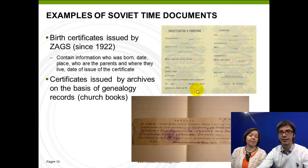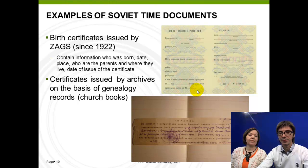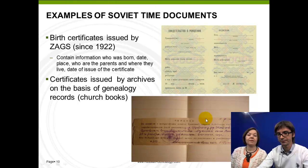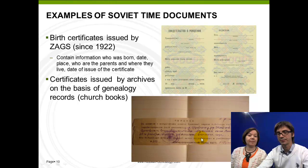Here are examples of Soviet-era documents. The birth certificate is issued by ZACs since 1922 and contains key information such as who was born, the date of birth, place of birth, who the parents are and where they live, and the date of issue of the certificate. Sometimes you'll receive a certificate issued by an archive on the basis of genealogy records — it will be just a piece of paper with information written in script form.